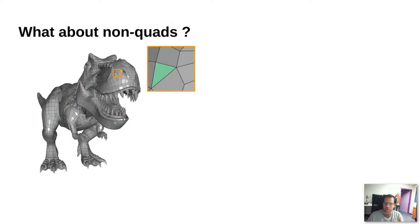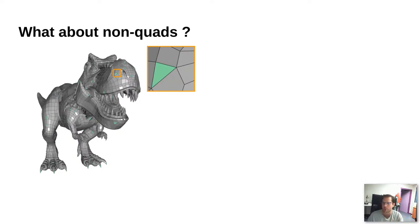For non-quad meshes — sometimes artists add a few triangles to complete their mesh — one solution is to use HTEC, which we presented just before, or you could use mesh colors. Both solutions are viable. HTEC currently maps better to current hardware units than mesh colors, but this is constantly evolving, so maybe in the future both will be viable solutions.